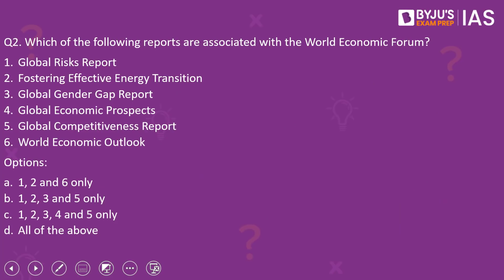Moving on to the second question of the day: which of the following reports are associated with the World Economic Forum? There are six reports mentioned here: Global Risk Report, Fostering Effective Energy Transition, Global Gender Gap Report, Global Economic Prospects, Global Competitiveness Report, and World Economic Outlook. Please have a look at the options.